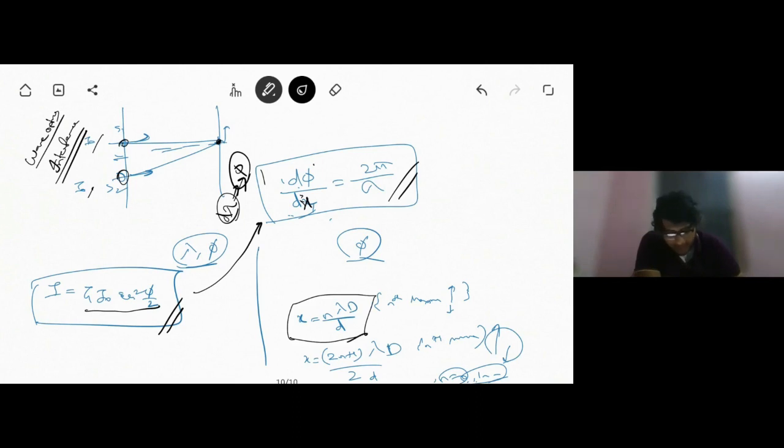Suppose we want to find the position of nth maxima, then x is given by n lambda d by D. If we are talking about nth minima, it is given by (2n plus 1) lambda d by 2D. Lambda is wavelength, n is the number of maxima or minima. Positive or negative sign will just give us whether it's going to be above or below the horizontal plane or central level of central maxima or central bright fringe. D is the separation between the source and the screen, while small d is the separation between the slits. So yeah, these are the basic stuff that we're supposed to be knowing right now.